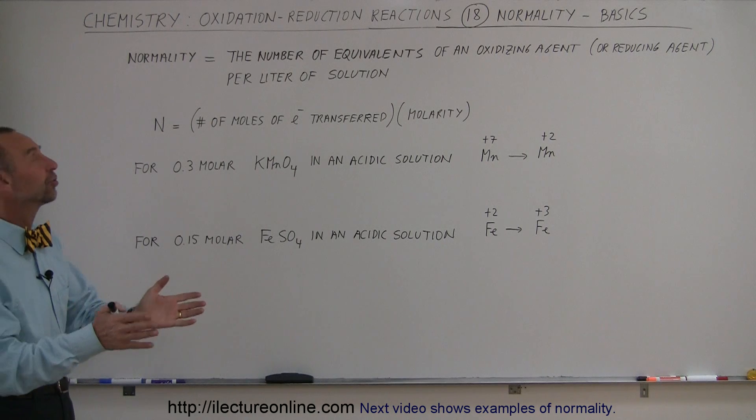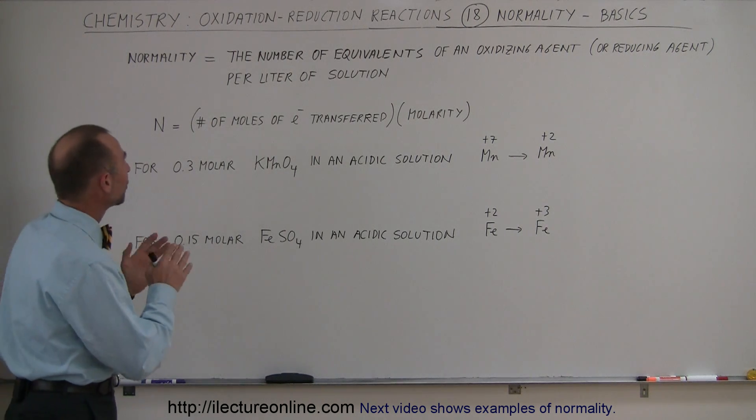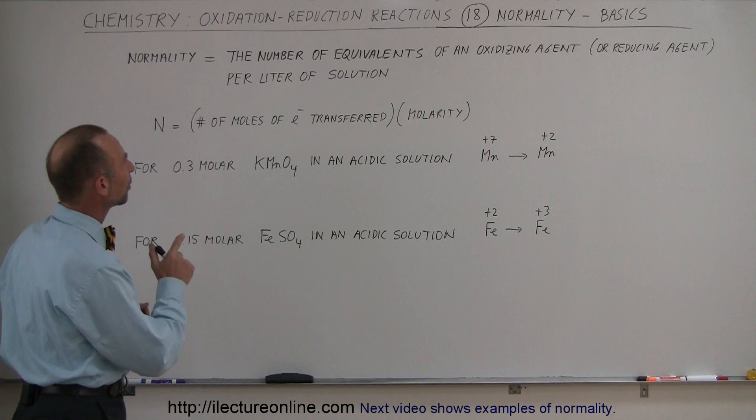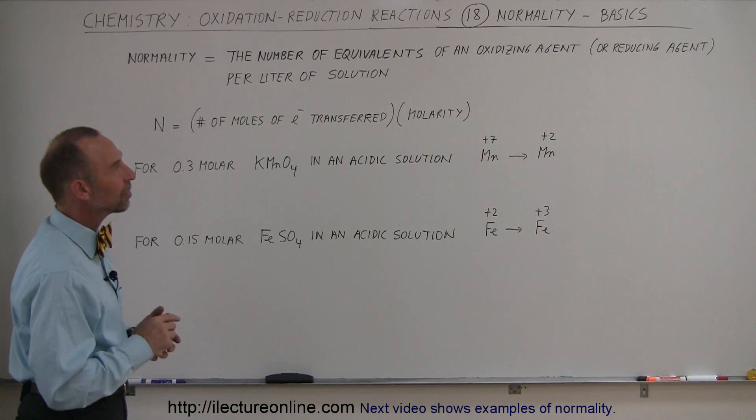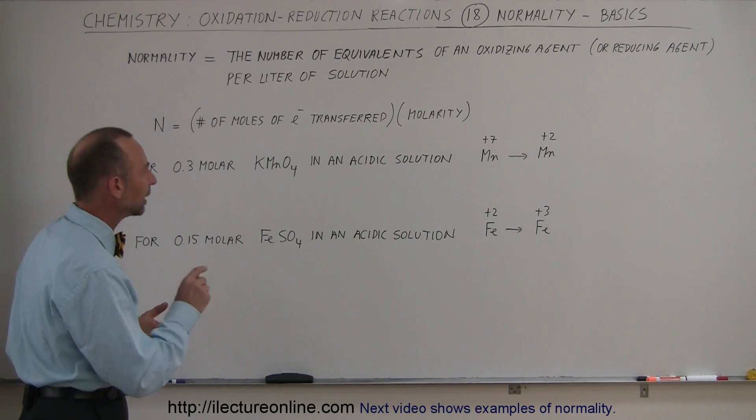So the official definition for normality is that it's the number of equivalents of an oxidizing agent or reducing agent per liter of solution.